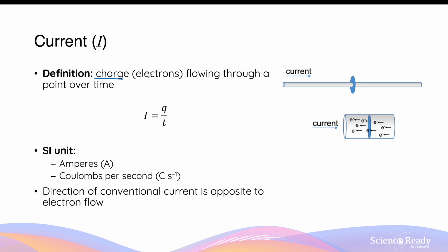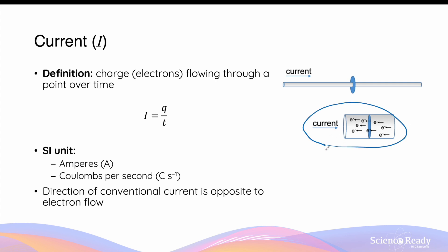Specifically in metals, charges refer to electrons, as electrons are loosely bound to the metallic structure, while other charges such as protons are more tightly bound to the nucleus of atoms and therefore are less mobile and less capable of moving through the conductor. So typically when we refer to current in the context of metals, we are referring to the movement of electrons.